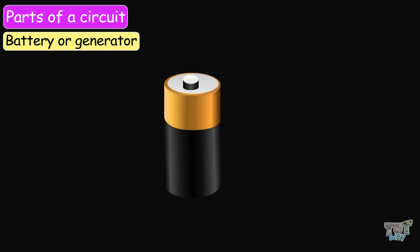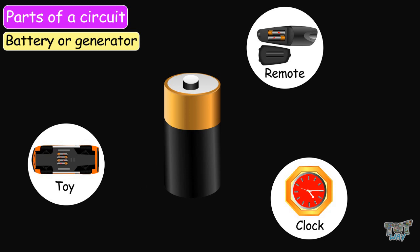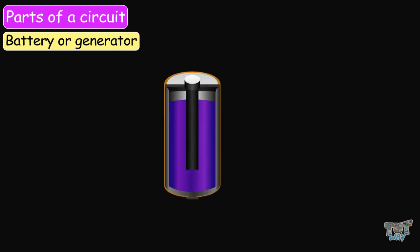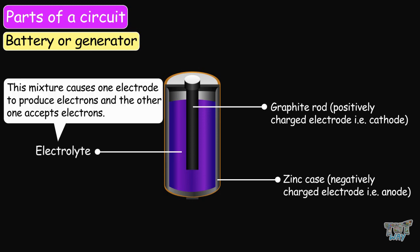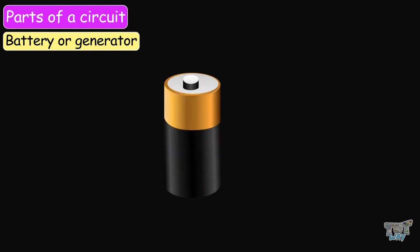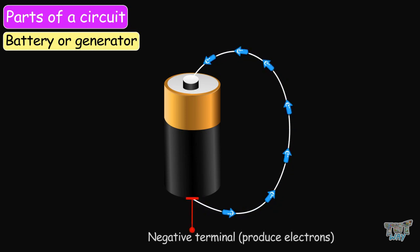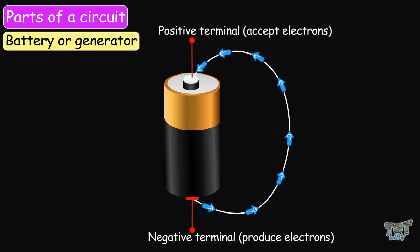This is a simple battery that we all see and use in our homes. We use this battery in our toys, remotes, clocks, and so on. This battery consists of two electric plates called electrodes at either end of the battery, placed inside a chemical mixture called electrolyte. This mixture causes one electrode to produce electrons and the other to accept them. The electrode that produces electrons is called the negative end, and the electrode that accepts electrons is called the positive end of the battery.